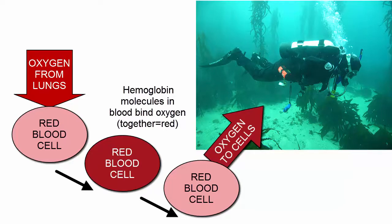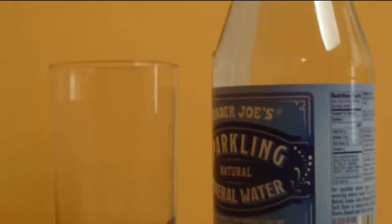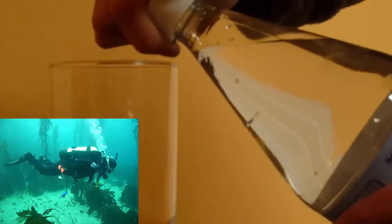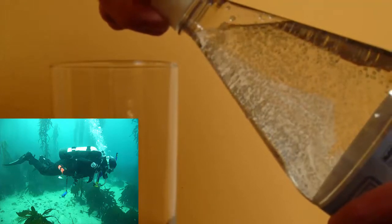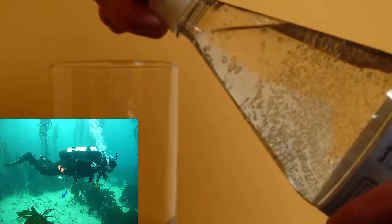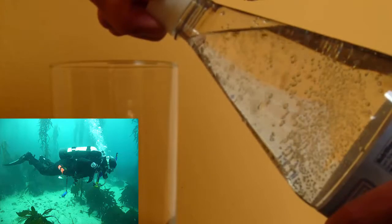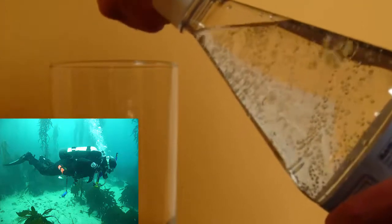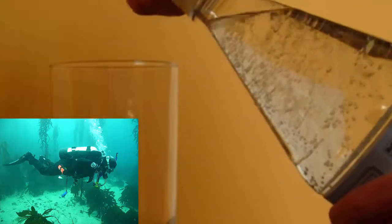Scuba divers must worry about a problem known as the bends. The gases they breathe enter the bloodstream and dissolve under pressures equivalent to the surrounding water. When they ascend, these gases exsolve out, forming bubbles in the blood — similar to opening a soda can, where lower pressure makes the gas immediately bubble out. This can kill a human if it happens quickly. To prevent this, scuba divers must ascend slowly, stopping periodically to allow gases in their blood to exsolve out slowly and re-equilibrate.